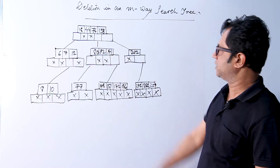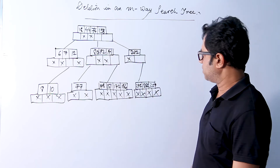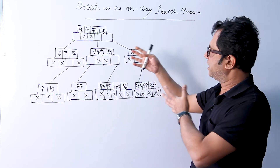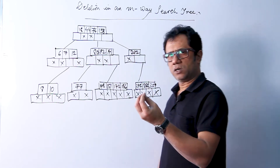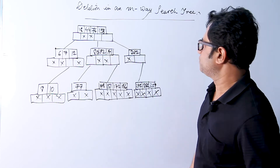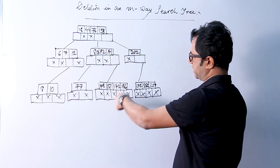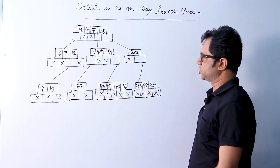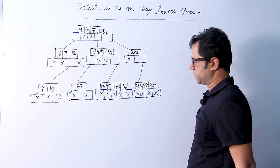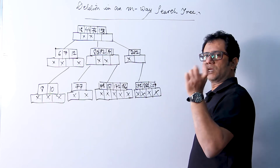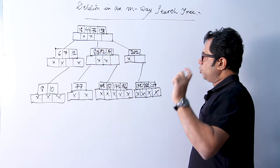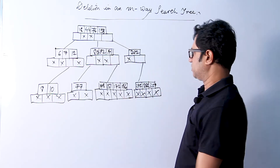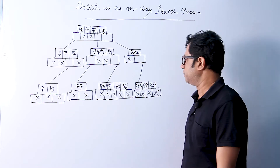We are going to perform the practical approach in this example and perform deletions from an M-way search tree as the case may be. The simplest case of deletion is the deletion of a key value which has both its left and right subtree pointers as null pointers.